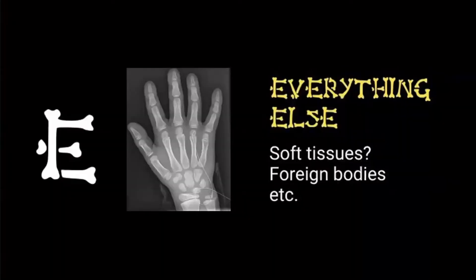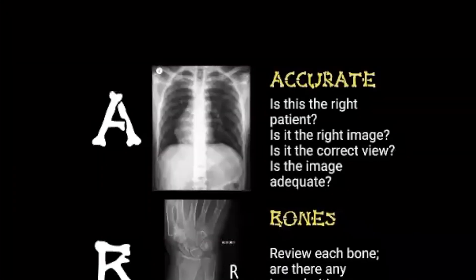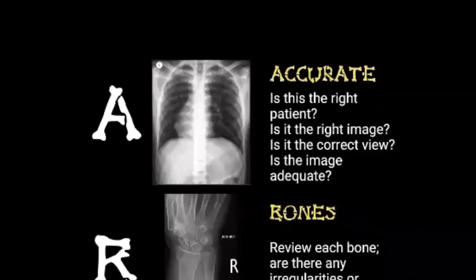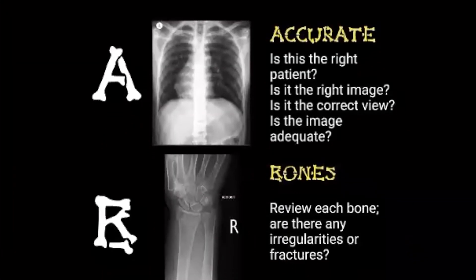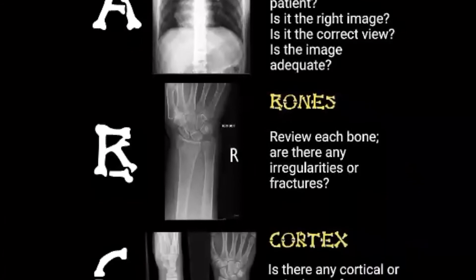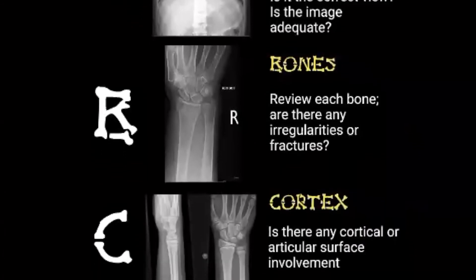E — everything else. Here is a little hand, and you can just see there's a wire running through it. Thinking about soft tissues — are there foreign bodies? Are there fingers missing? Is there something else going on that we're missing? Just thinking about your ABCDs, a familiar principle you can apply to other x-rays.